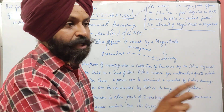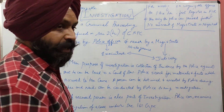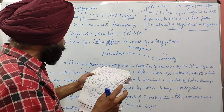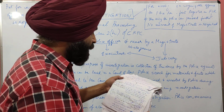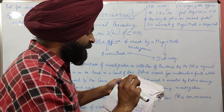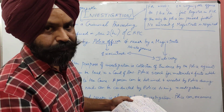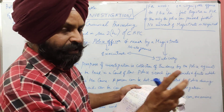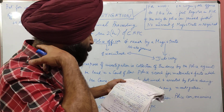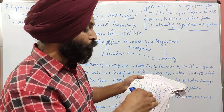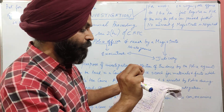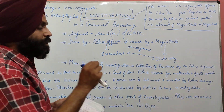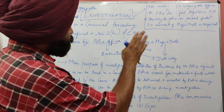The judiciary or the magistrate does not interfere in any investigation by the police. It is the sole prerogative of the police to investigate a case, especially a cognizable case. Cognizable cases are serious offenses — generally imprisonment is more than 3 years or up to life imprisonment. It could be less than 3 years in some cases depending upon the offense, but generally it is more than 3 years. It is a serious offense.